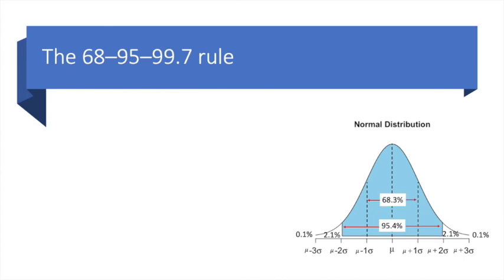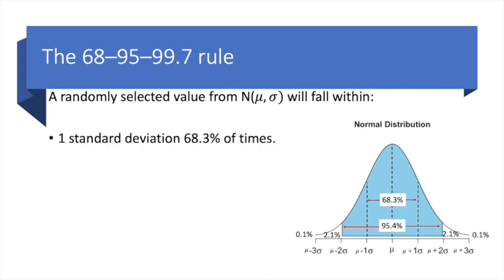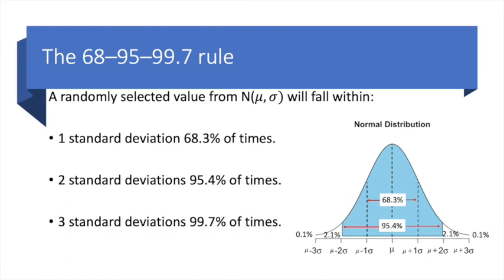The normal distribution is famous for how it splits the random values within different standard deviations. It is called the 68, 95, 99.7 rule. What this means is that if a variable is normally distributed and we randomly select its values, then these values will be one standard deviation away from the mean 68.3% of the times, two standard deviations away from the mean 95.4% of the times, and three standard deviations away from the mean 99.7% of the times.